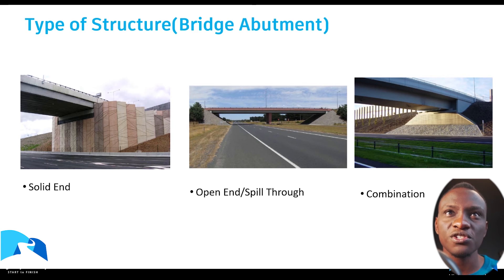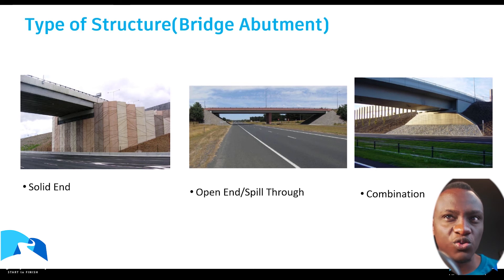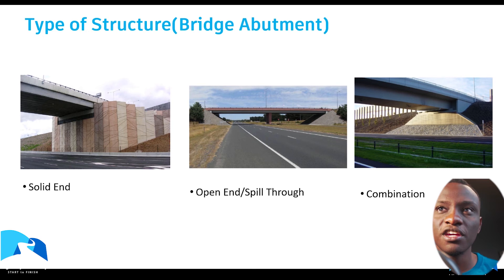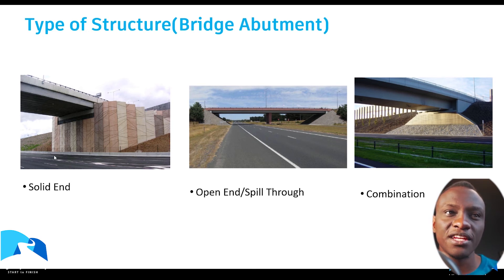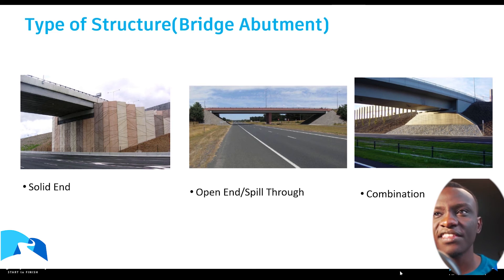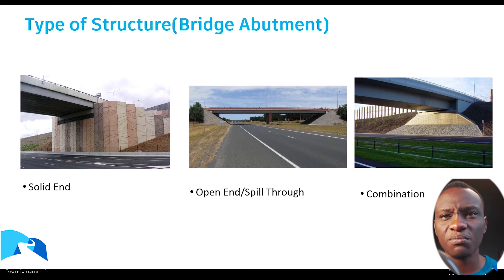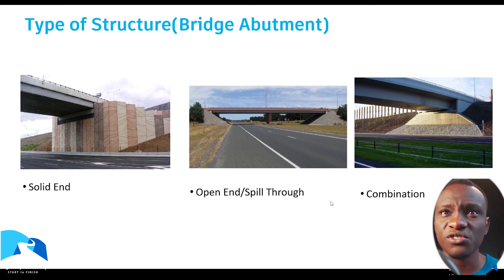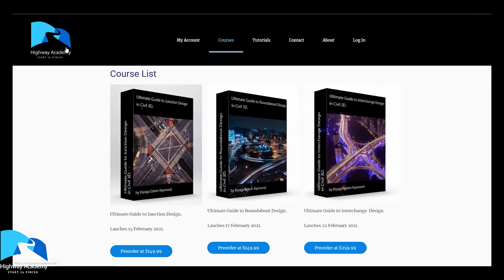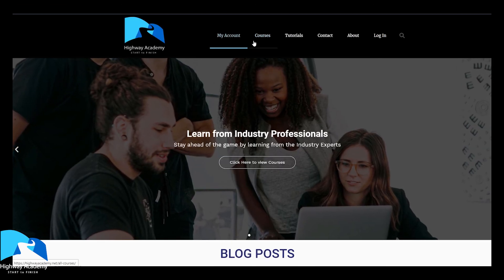Regarding types of structures, specifically bridge abutments — this is not a structures course so the design won't be covered in detail. As a highway engineer rather than a structural engineer, the focus will be on the main types: the solid end abutment, the open spill-through, and a combination of both. In this course, we will be looking at how to design the spill-through abutment.